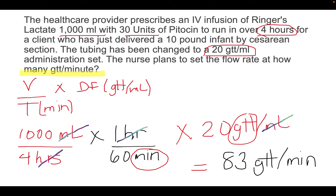Always remember it's better to do your calculations together instead of individually. It's good to lay out everything — ml, hours, minutes, and drops — all in one calculation, because doing them individually means you'll have to round figures at each step.